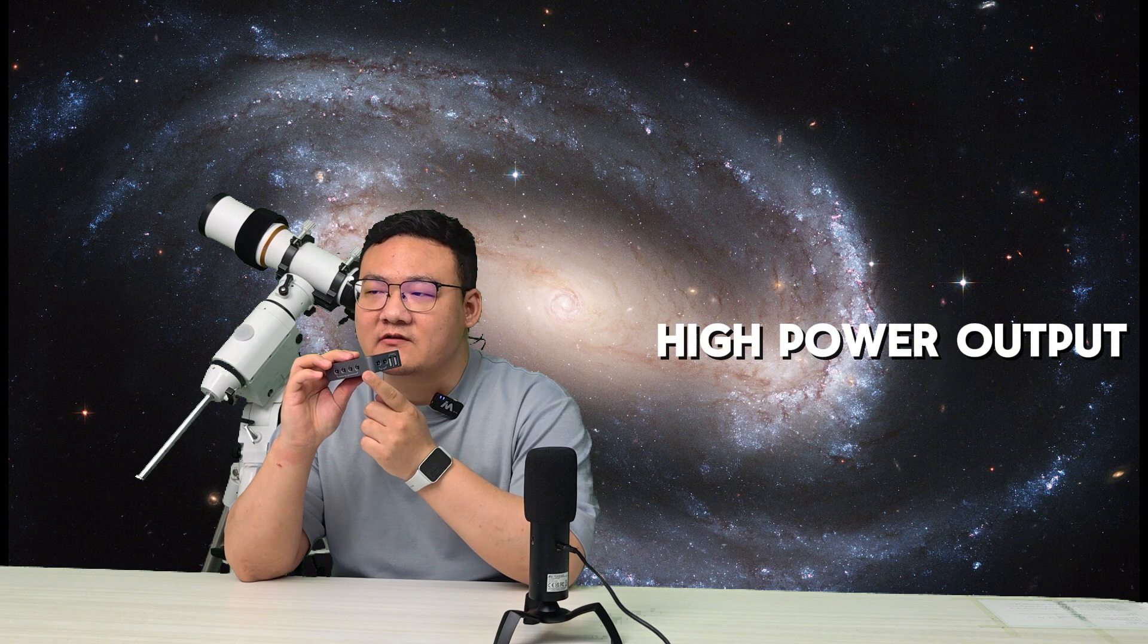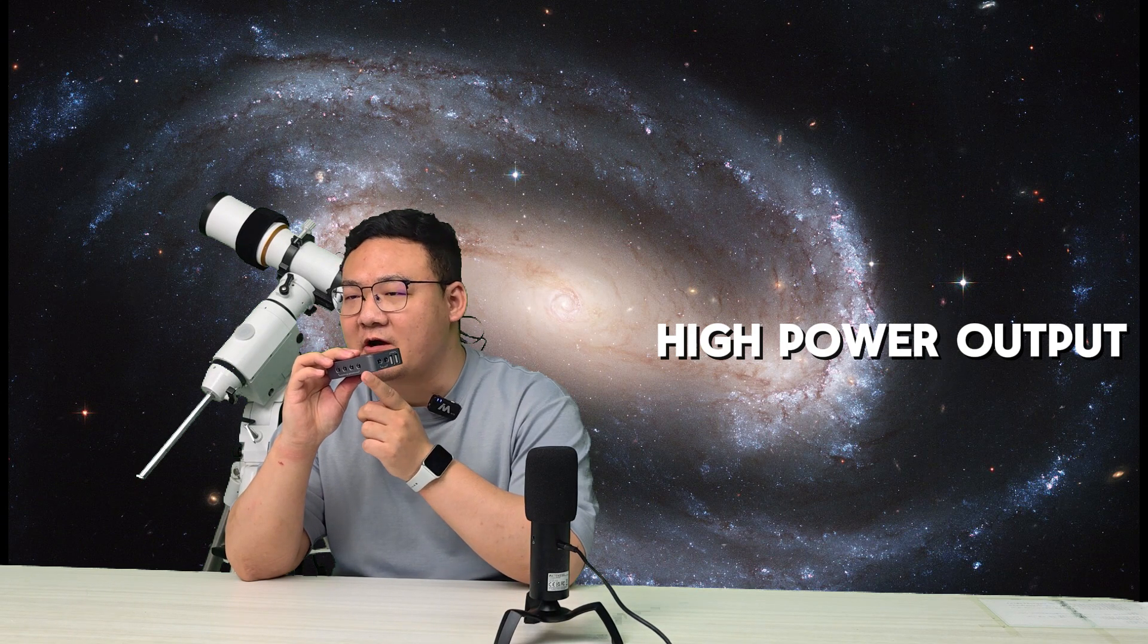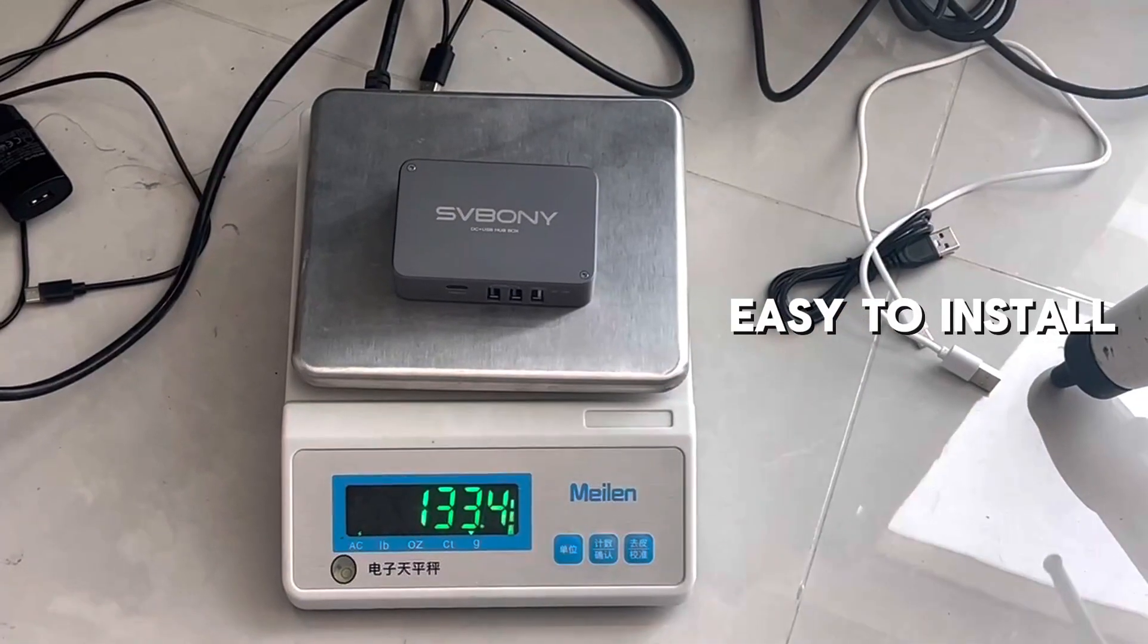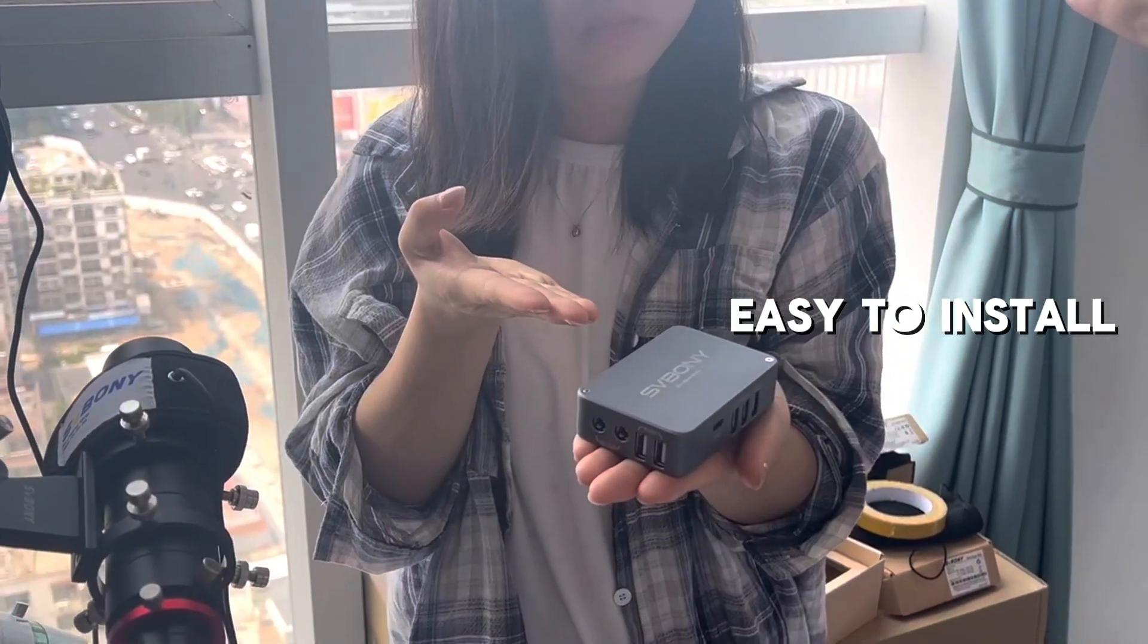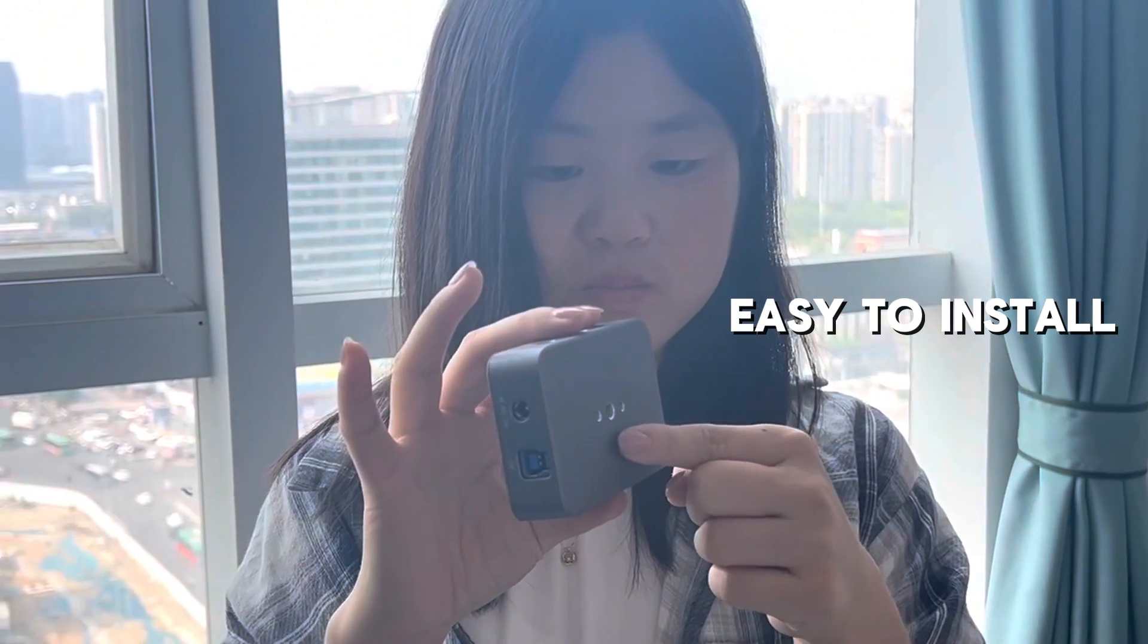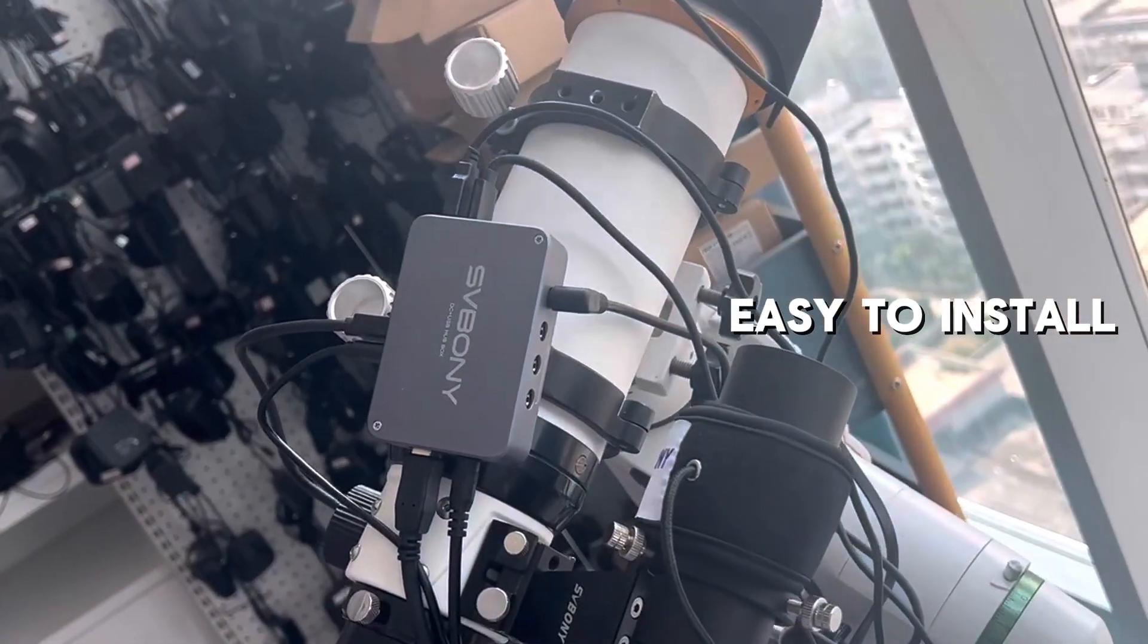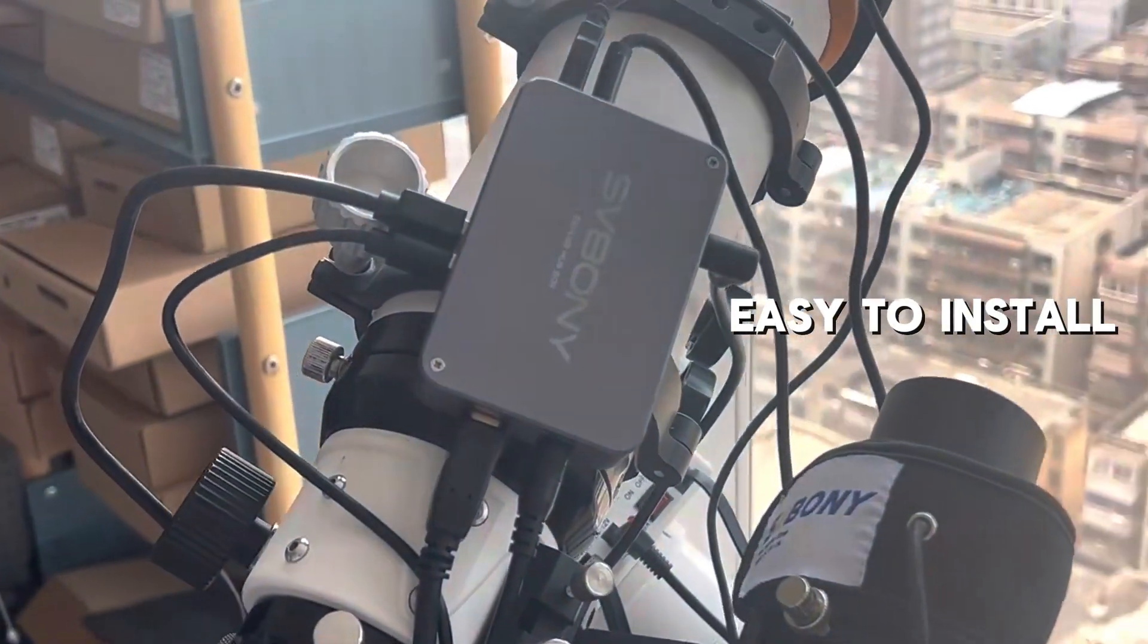Using this together with an astronomy controller can greatly improve your astrophotography experience. The third point is easy installation. The SV241 weighs under 140 grams and has a very compact size. It's even smaller than the palm of my hand. Plus, there's a surprise on the bottom. It features M4 and UNC 1/4 mounting holes, which means you can securely fix it onto a dovetail plate.